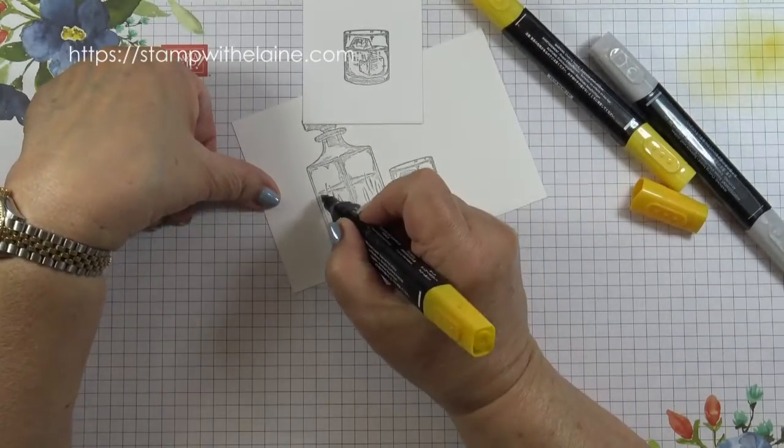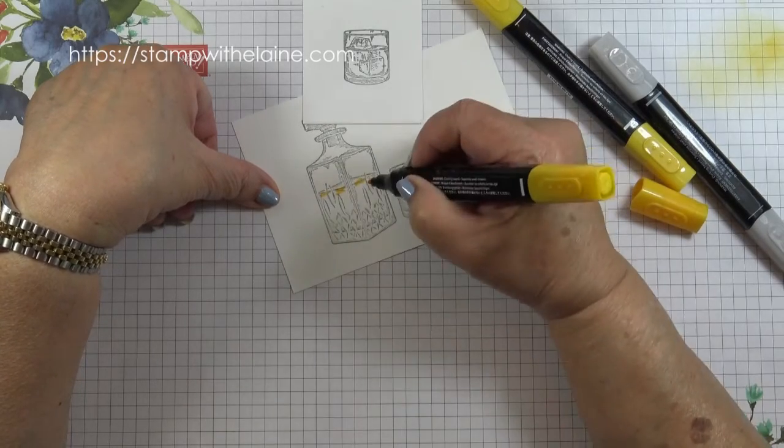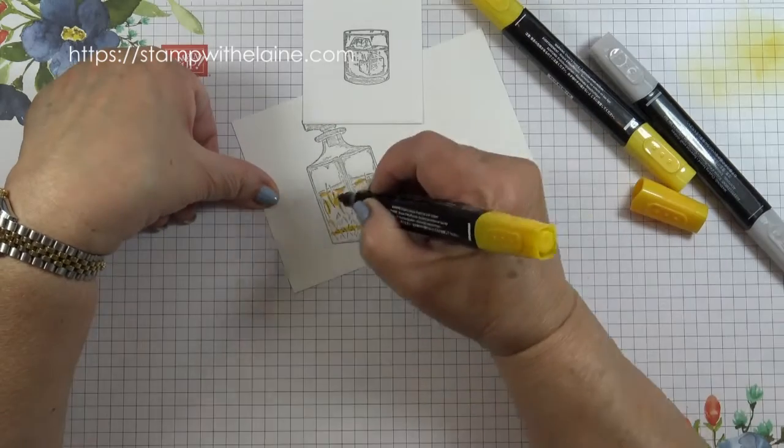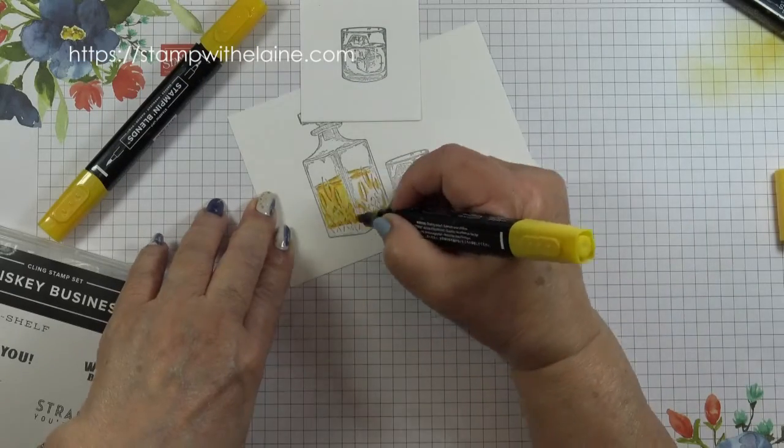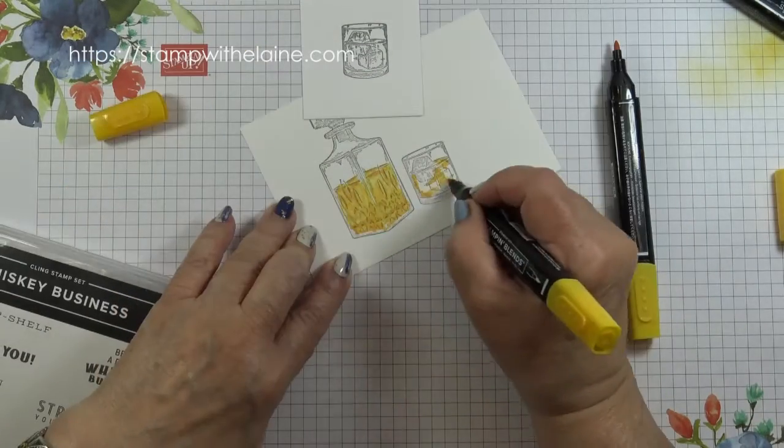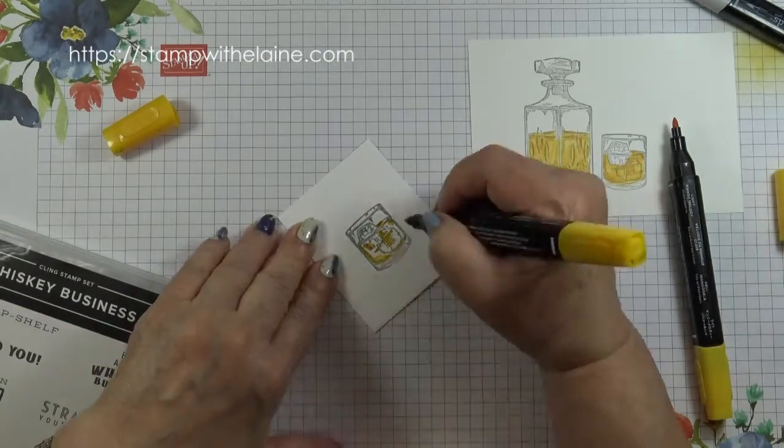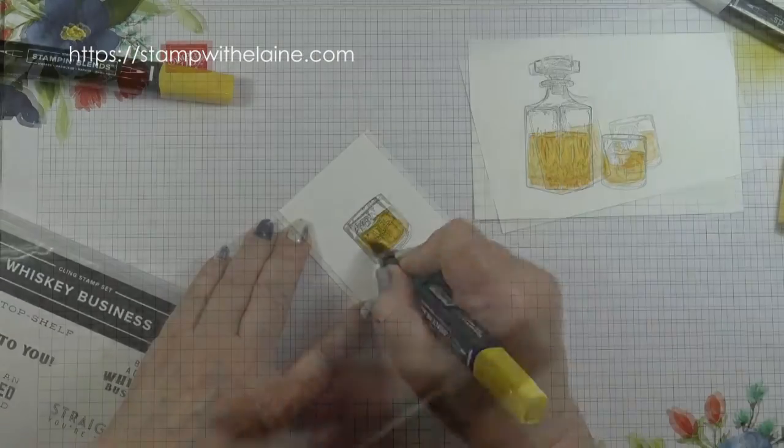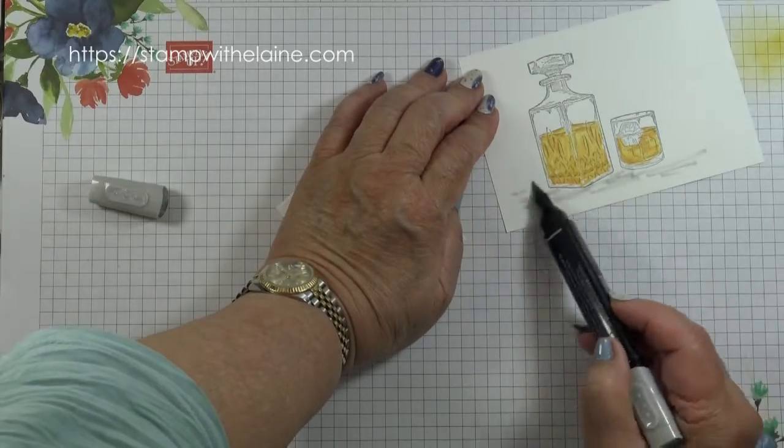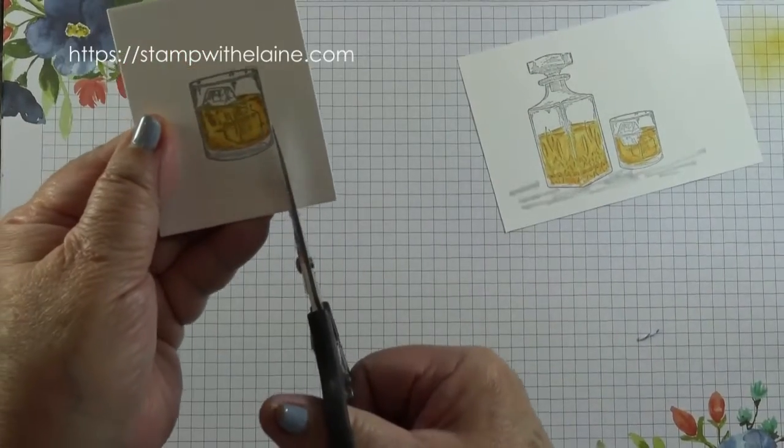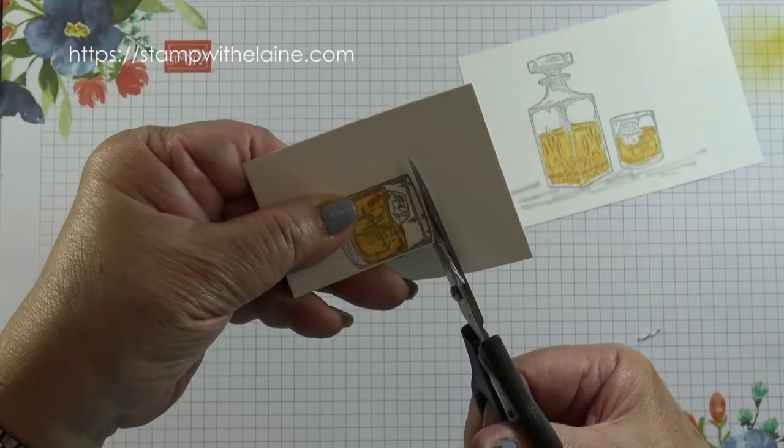So I'm going to follow the shading on the stamp. Ground that. Then fussy cut this whiskey glass. There isn't a die for it but it's easy enough to cut.